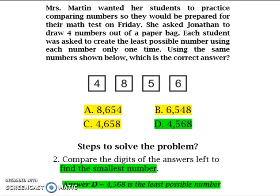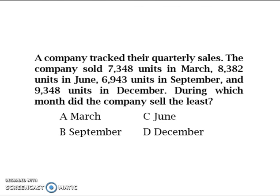Let's look at another problem that is similar. A company tracked their quarterly sales. The company sold 7,348 units in March, 8,382 units in June, 6,943 units in September, and 9,348 units in December. During which month did the company sell the least?